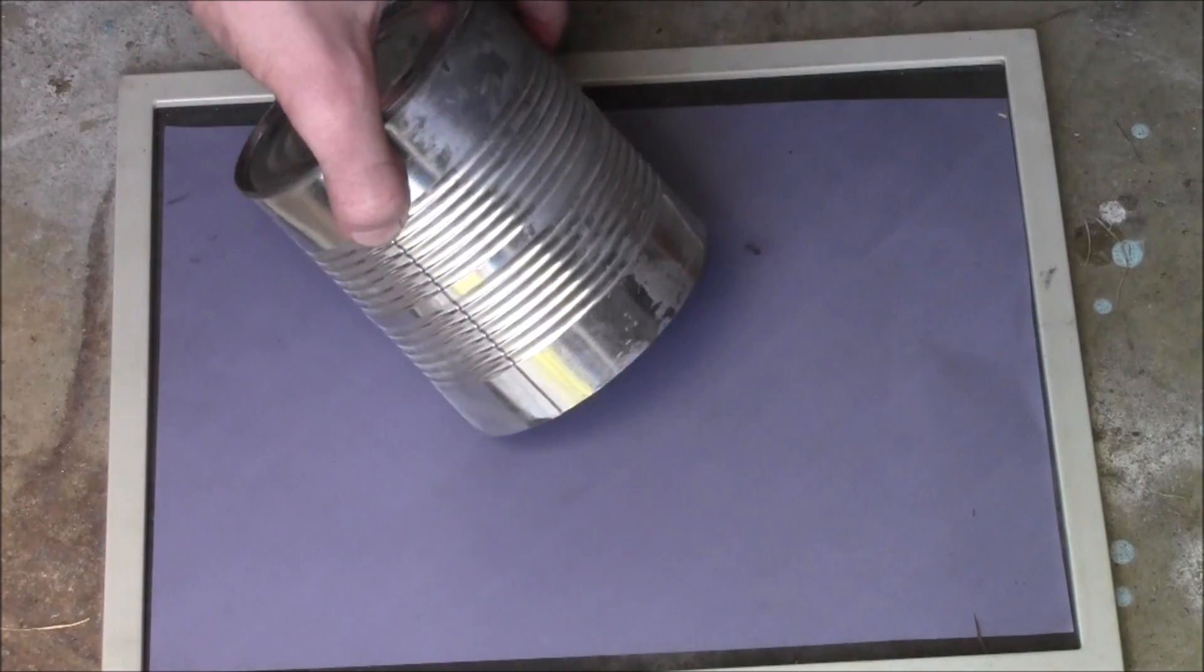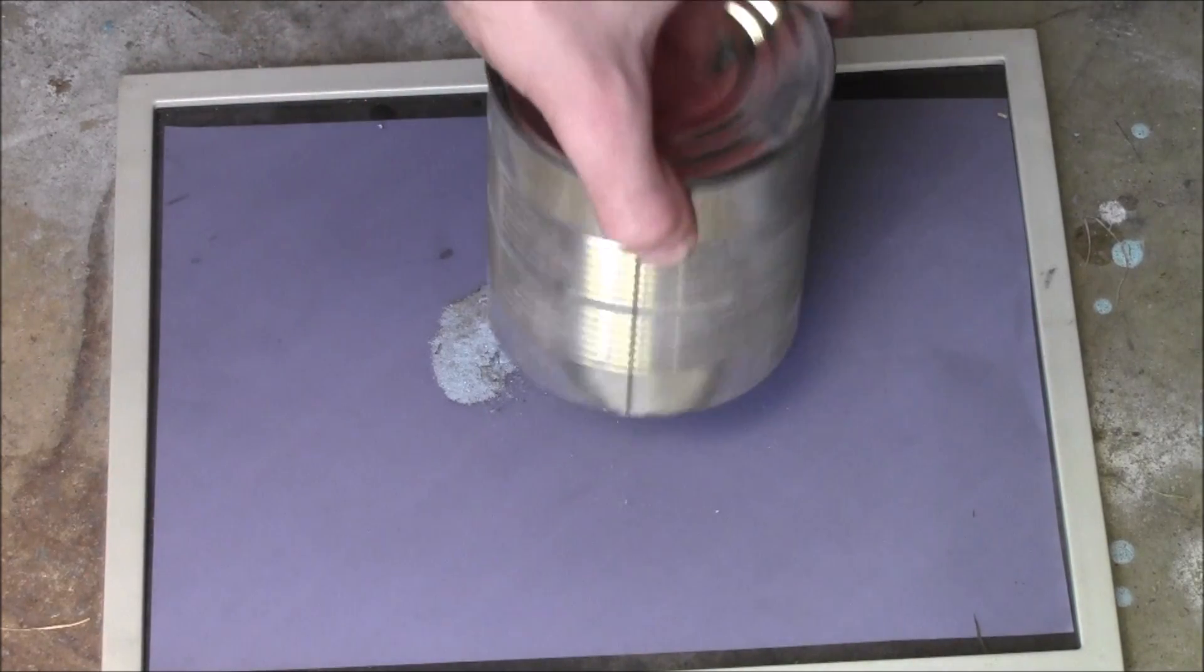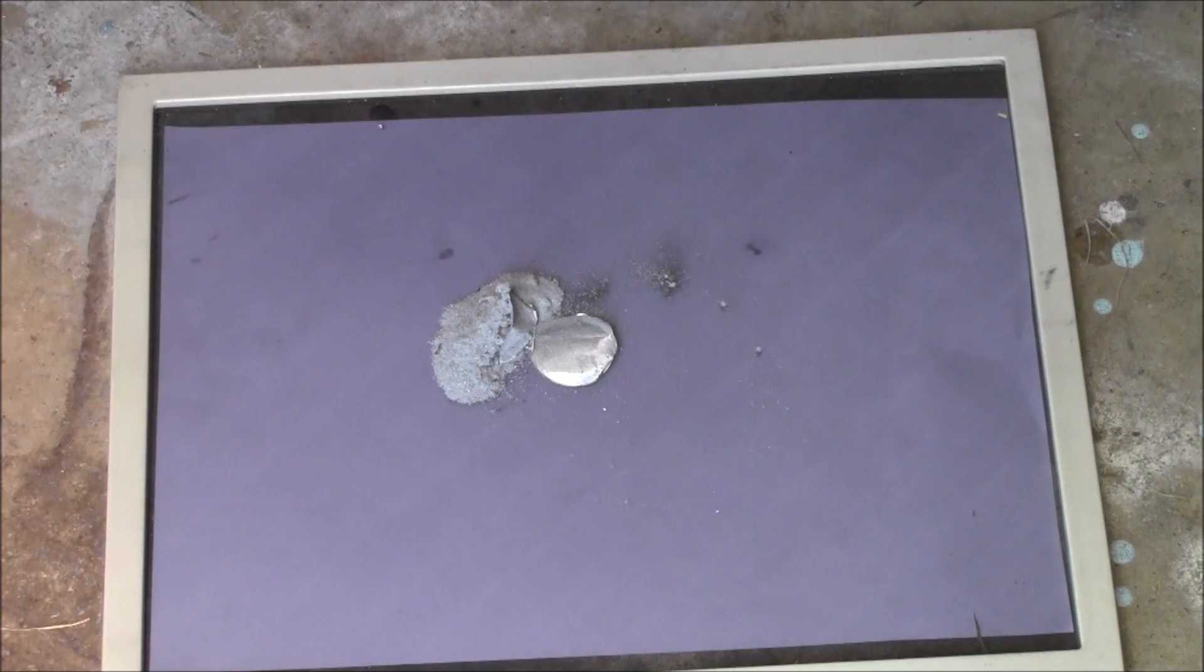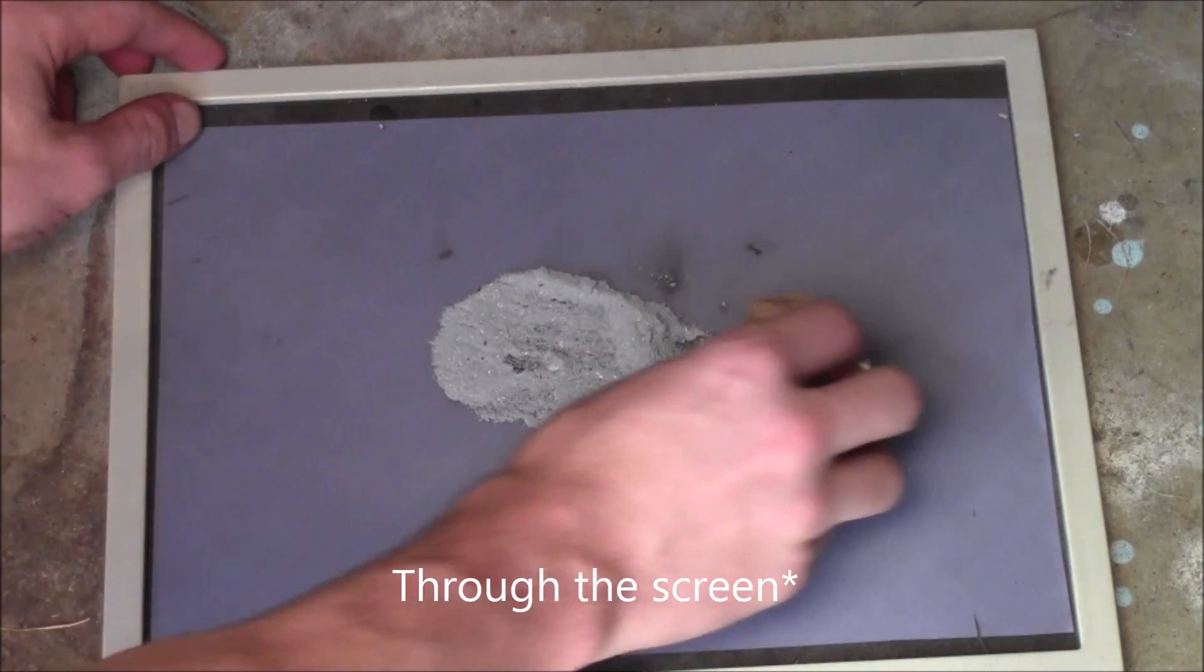For this we will be using my mesh screen which I have used in my aluminum video. So just pour it right in the middle of it and then start moving it around and it will start to go through the mesh screen.